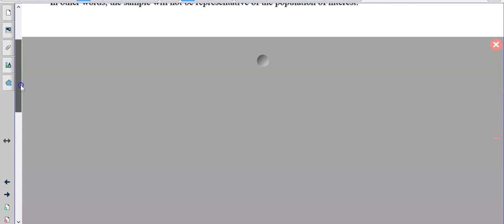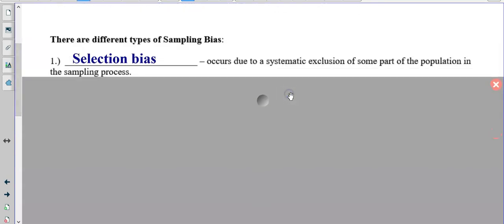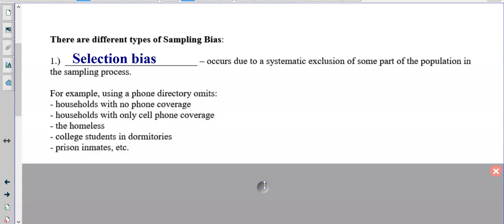So we're going to talk about different types of bias. There are three types of sampling bias. The first one is called selection bias. This occurs due to a systematic exclusion of some part of the population in the sampling process. So for example, using a phone directory could leave out all these groups, especially nowadays. A lot of people don't have landlines, so that cuts them out. People who are homeless, college students in dorms don't have a landline. There might be a phone on the floor. Prison inmates, same idea.